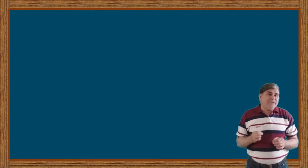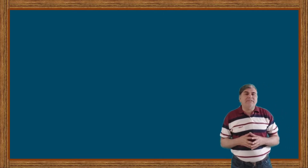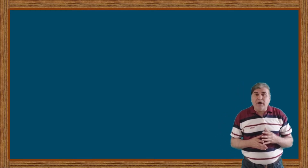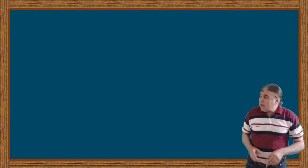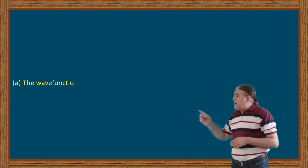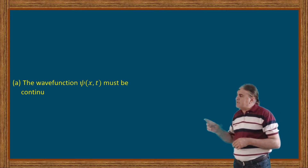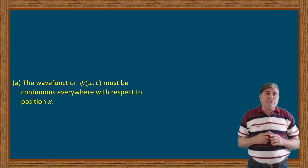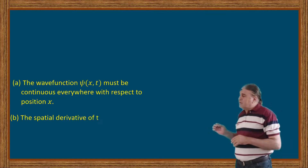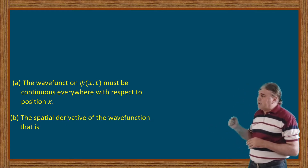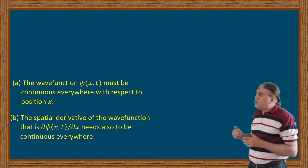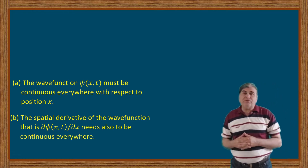In this video you will learn the concepts behind the basic requirements of the wave function. The two requirements I am talking about are related to the continuity of the wave function. That is, the wave function ψ(x,t) must be continuous everywhere with respect to position. And number two, the spatial derivative of the wave function, that is ∂ψ(x,t)/∂x, needs to also be continuous everywhere.